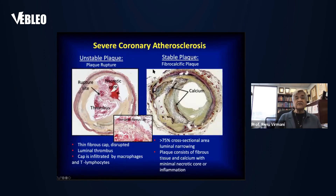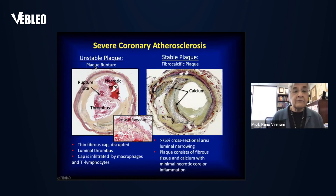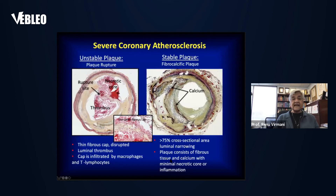Severe coronary atherosclerosis can be either unstable or stable plaque. Unstable plaque has a thin fibrous cap with disruption; the cap is infiltrated by macrophages and T cells — this is what is seen in unstable angina and plaque rupture. In plaque rupture, there is sudden rupture of the fibrous cap with an overlying thrombus. Stable plaque has greater than 75% cross-sectional area luminal narrowing, with fibrous tissue and calcium and minimal necrotic core.